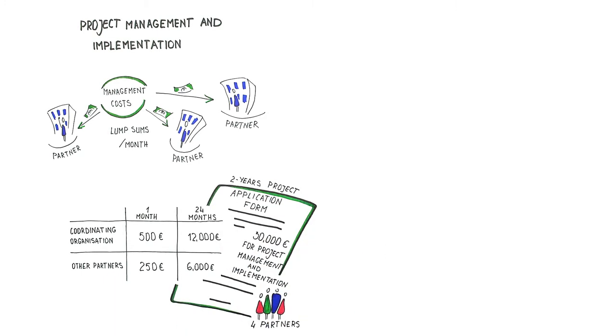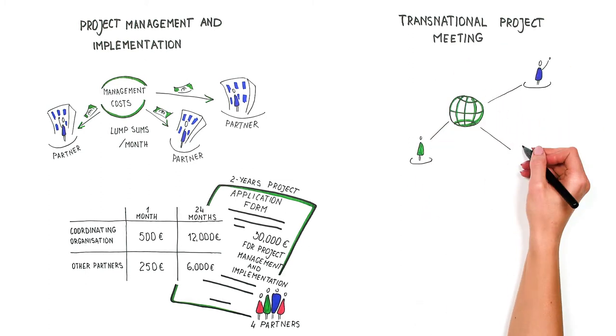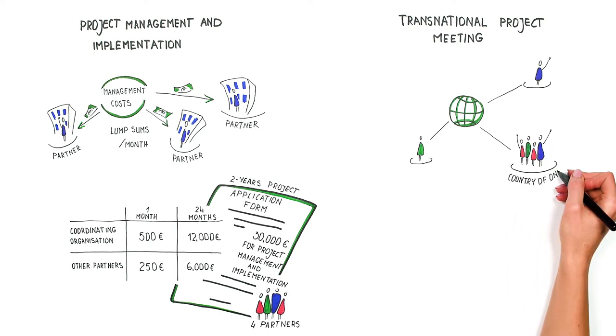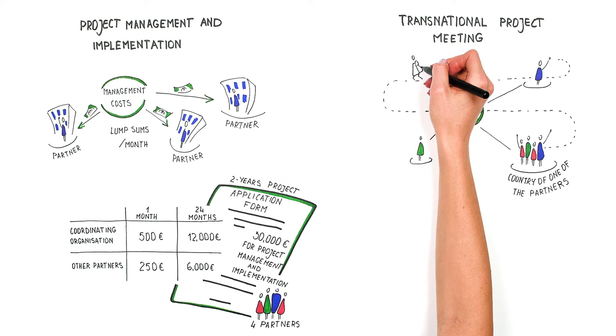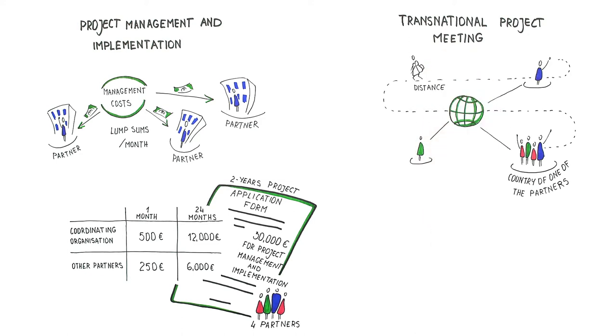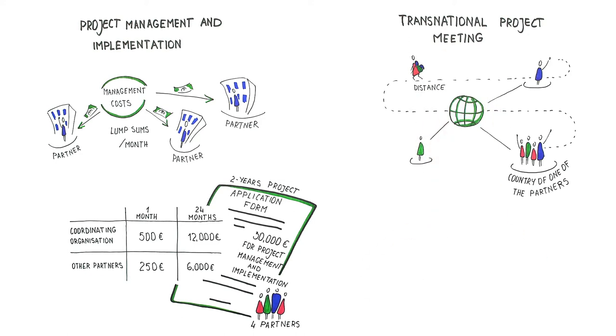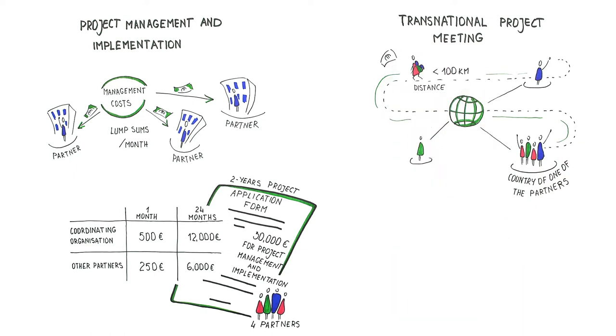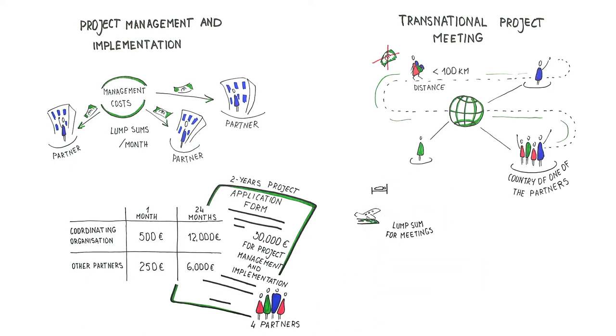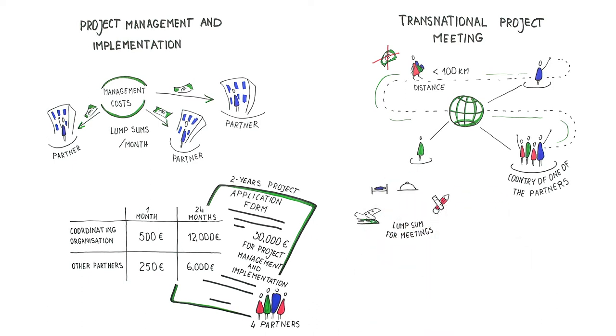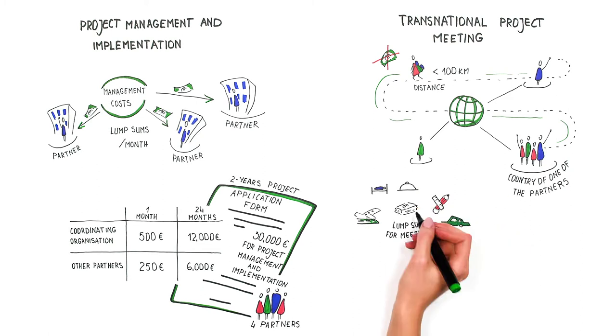Transnational meetings are meetings of representatives of partner organizations to implement and coordinate the project. These meetings should take place in the country of one of the partners. The lump sum depends on the travel distance but not on the duration of the meeting. If the distance is less than 100 kilometers, representatives of the host do not receive funding.